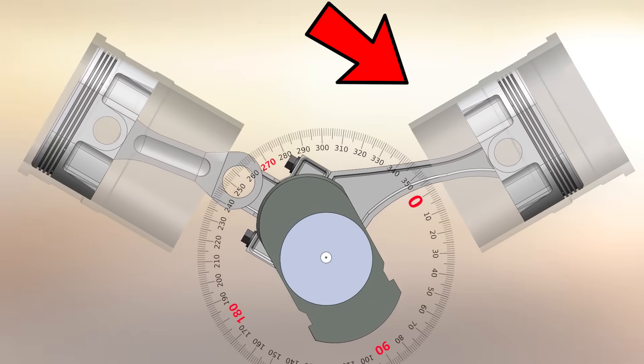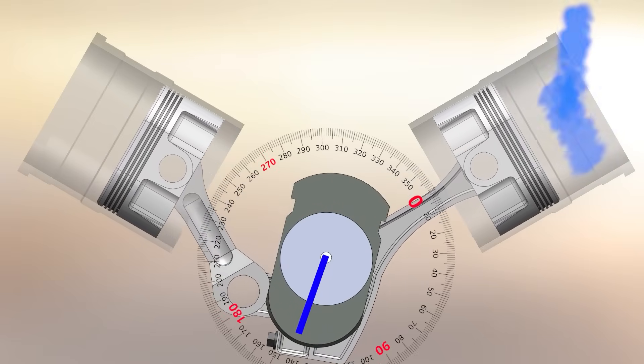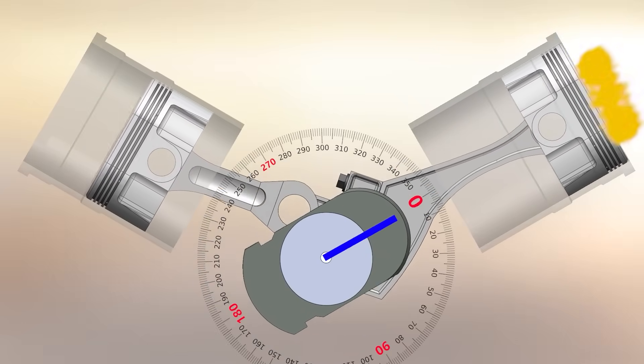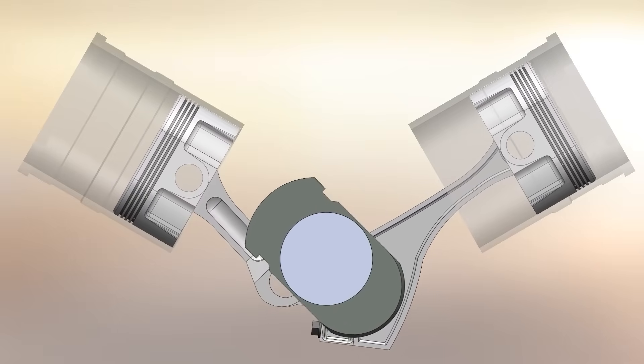The right bank of cylinders operates evenly. Each stroke is 180 degrees of the crankshaft. Intake, compression, combustion, exhaust.